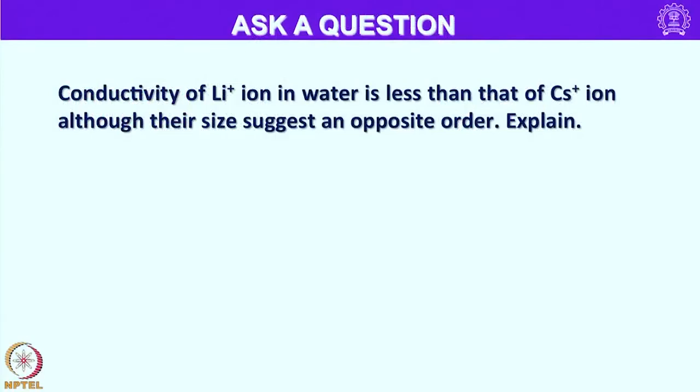When the hydration enthalpy decreases, ions lose ability to get coordinated with ligands such as water. As a result, fewer water molecules are present in the coordination sphere, and as expected, the hydrated radius decreases. Conductivity of lithium-plus ion in water is less than that of cesium-plus ion, although their size suggests an opposite order.